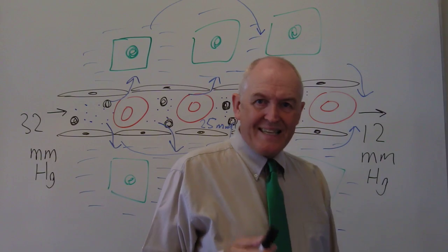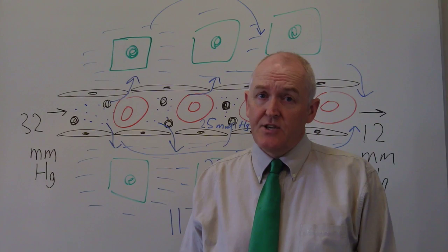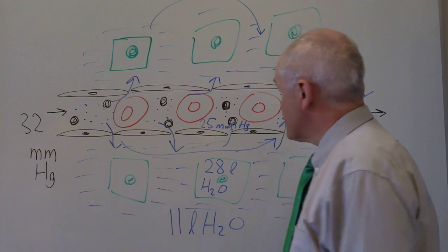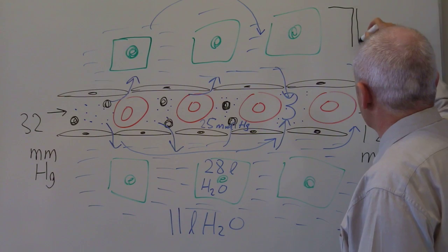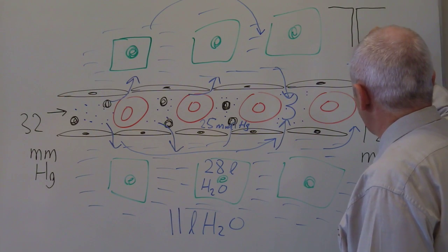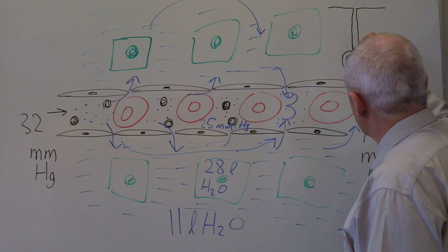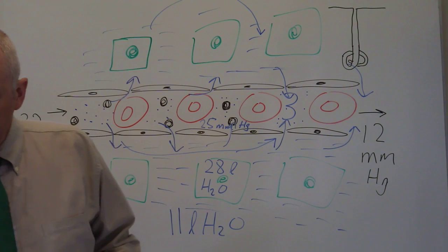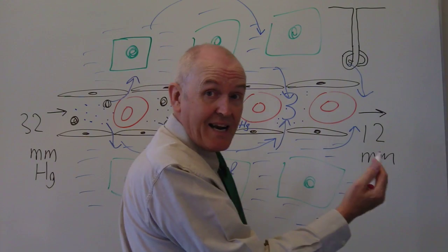Let's use the example of sweating as an application of why the compartmentalization of body fluids is so crucial. In sweating, you've got the surface of the skin and a sweat gland. The sweat gland is basically a coiled tube in the lower parts of the dermis, and of course you're sweating water, which is derived from the plasma.